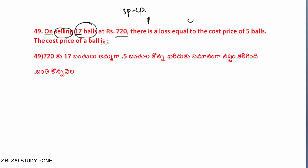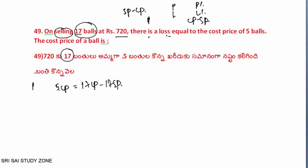CP is equal to 17CP minus 17SP. Why do we consider this a loss? There is a loss and there is a profit — gain. We have the basic process: profit, loss, profit percentage, loss percentage. Profit is equal to selling price minus cost price. So 5CP equals 17CP minus 17SP. Therefore 12CP equals 17SP.